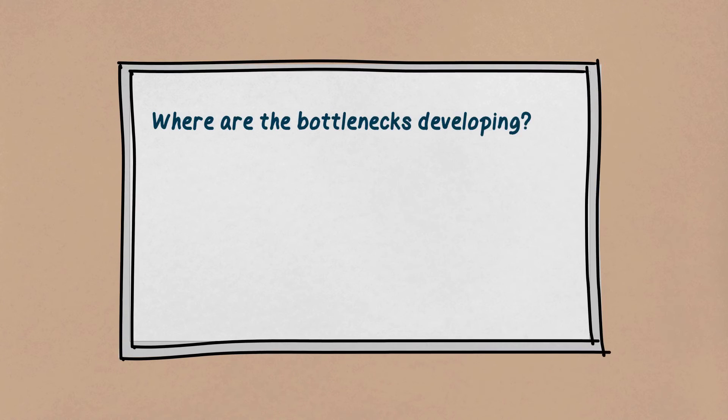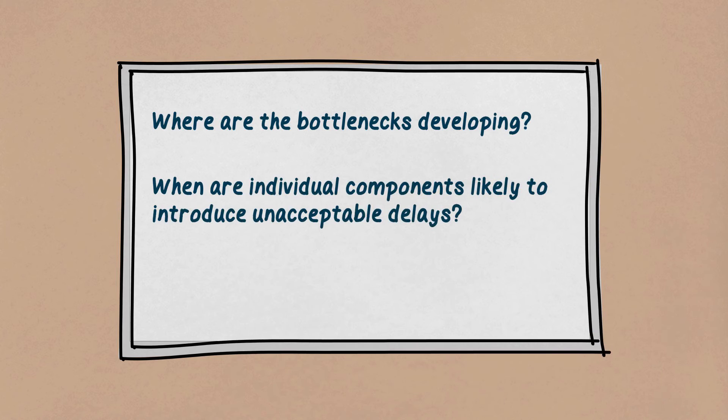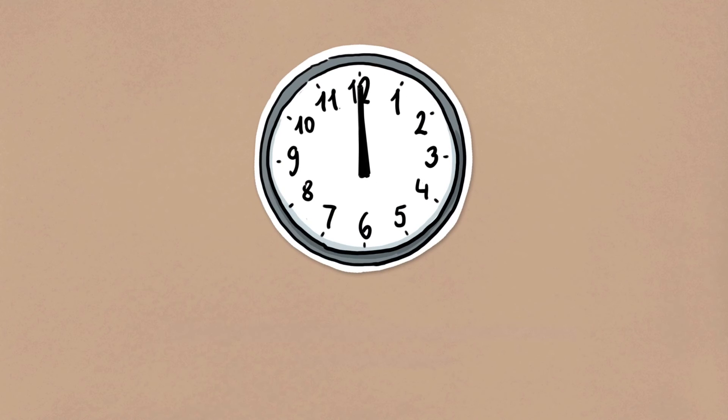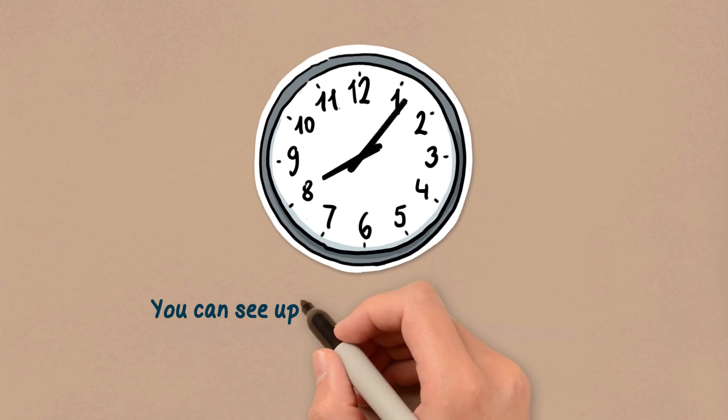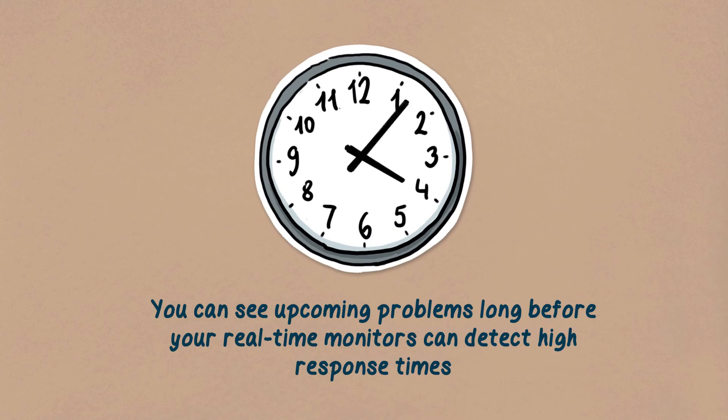Where are the bottlenecks developing? When are individual components likely to introduce unacceptable delays? What can you do to avoid an outage? This availability intelligence gives insight that is sooner than real-time, because you see upcoming problems long before your real-time monitors can even detect high response times.